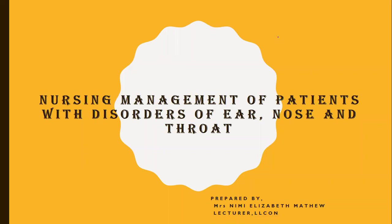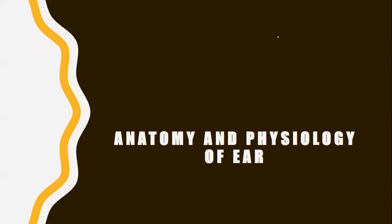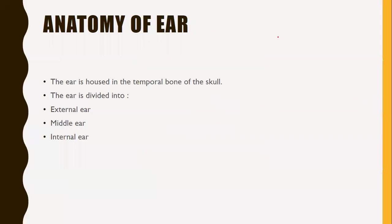In this class we can learn more about the review of anatomy and physiology of ear as well as the assessment part of the ear. First of all, the anatomy and physiology of ear: the ear is housed in the temporal bone of the skull. It is divided into three parts namely external ear, middle ear and internal ear.